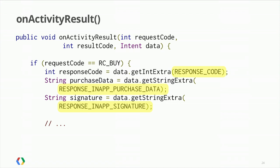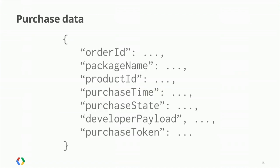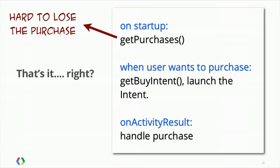The purchase data is a JSON object containing the order ID, package name, product ID (also known as your SKU), purchase time, purchase date, developer payload — which is very important and we'll talk about next — and the purchase token, which is a long alphanumeric string that identifies that particular purchase. That's pretty much all there is for a simple application: on startup you call getPurchases, when the user wants to buy something you call getBuyIntent, fire that intent, and then handle the result in onActivityResult.